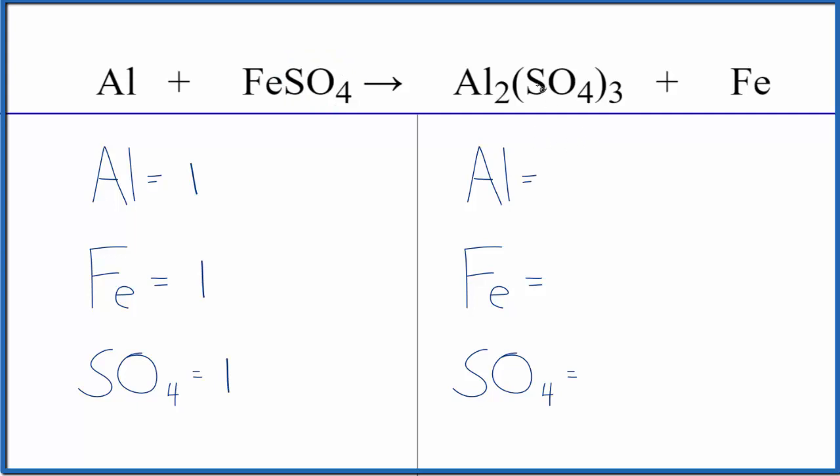On the product side, we have two aluminums, one iron, and then we have one sulfate times three, so three sulfates. You can see that this is a lot neater. It saves a lot of time and can keep you from making mistakes.